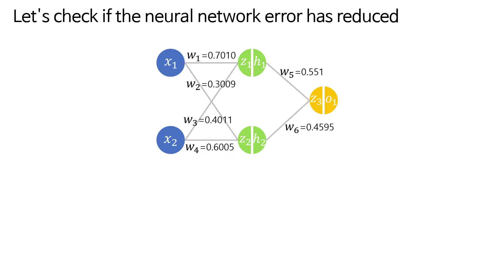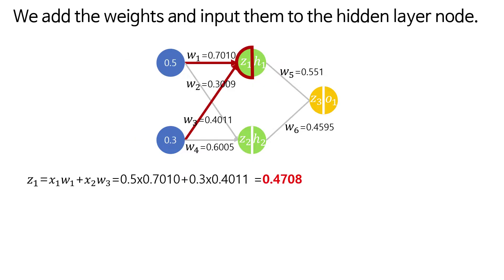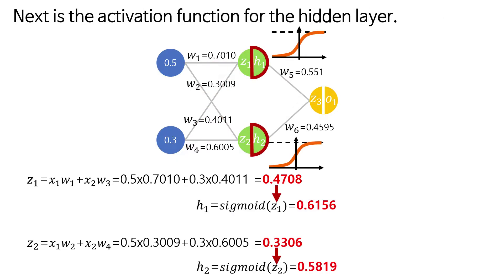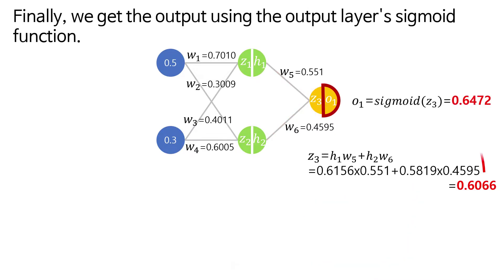Let's check if the neural network error has reduced using the backpropagation algorithm. Let's input the same values again. We add the weights and input them to the hidden layer node. Next is the activation function for the hidden layer. Then we input to the output neuron after multiplying with the weights. Finally, we get the output using the output layer's sigmoid function.